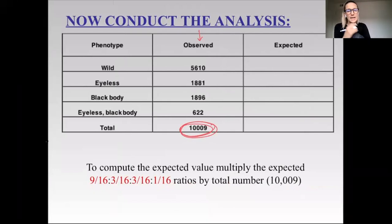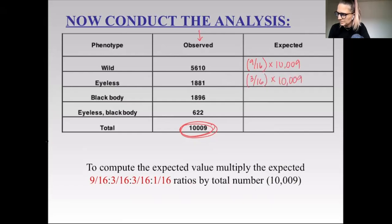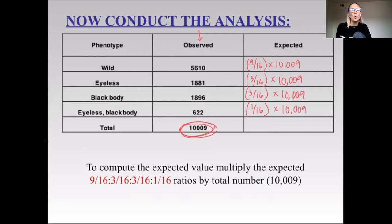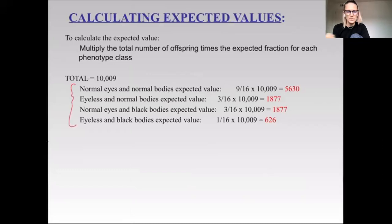The way you calculate expected values is you multiply the total by your appropriate ratio fraction. We know that the wild type phenotype — the normal ones — are going to be nine sixteenths, so we do nine sixteenths times the total. For only eye differences, we have three sixteenths times the total. For black body, three sixteenths times the total. And for the completely recessive, one sixteenth times the total number.